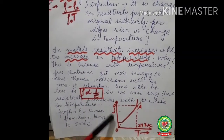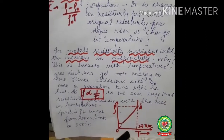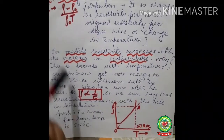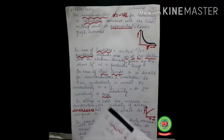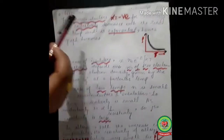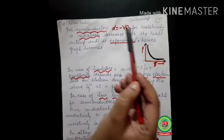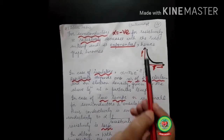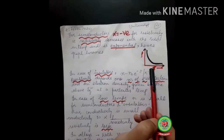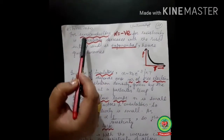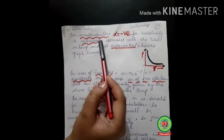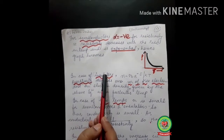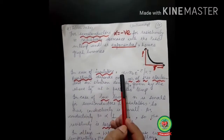The graph for metals shows resistivity increasing linearly (directly proportional) with temperature — the graph is a straight upward line. For semiconductors, alpha is negative, meaning resistivity decreases with the rise in temperature, and this decrease is in exponential form. The graph for semiconductors shows resistivity decreasing exponentially as temperature rises.